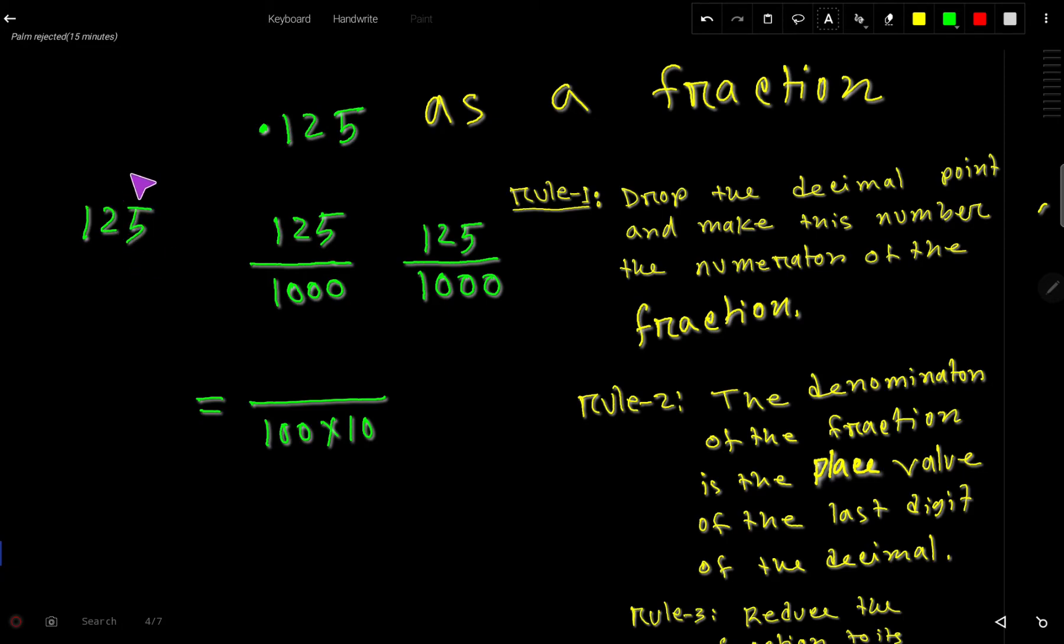Now we split 125 as a product of two numbers. Since the unit digit is 5, it's divisible by 5. 5 goes into 12 twice, 2 times 5 is 10, subtract to get 2, bring down the 5, and 5 goes into 25 five times. So we can split 125 as 25 times 5. Cancel this 5 with the 5 in the denominator.